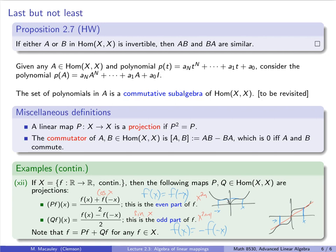That's the end of this lecture. A little bit of a misfit lecture, but worth including — some of this will come up later. Next, we will look at what's called the transpose of a linear map, which generalizes the notion of the transpose of a matrix to the abstract setting of maps between any vector spaces.